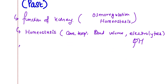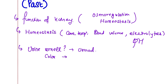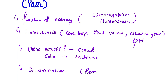Another question: what is the urine color? Urochrome is the pigment that gives urine its color. Another question: what is deamination? Deamination is the removal of the amine group (NH2 group) from a molecule.